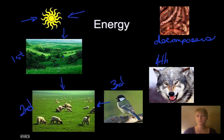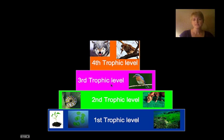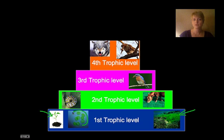Taking a closer look at these different levels: on the first level we will have plants, algae, and some photosynthesizing bacteria as well. So our first trophic level is anything that uses photosynthesis to obtain energy.